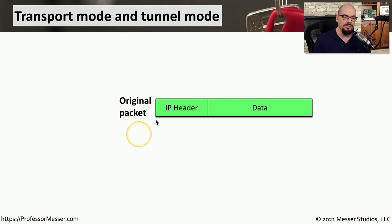In transport mode, we're only encrypting the data and the original IP header remains in its original form. You have the Authentication Header and the Encapsulation Security Payload combined with an integrity check value at the end to make sure data gets through the network without any corruption. With tunnel mode, which is undoubtedly the most common implementation of IPSec, both the IP header and data are encrypted, and the AH and ESP protocols are wrapped around that data so it can be sent through the network with both encryption and integrity.